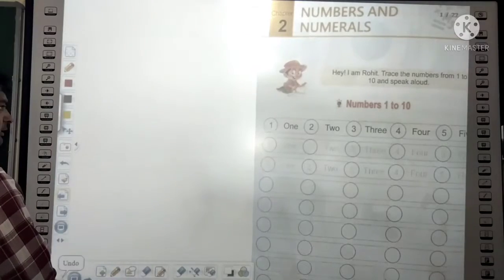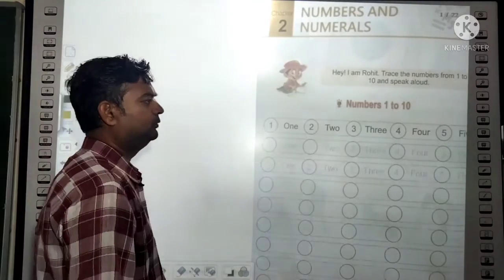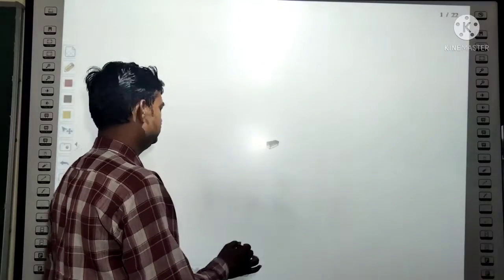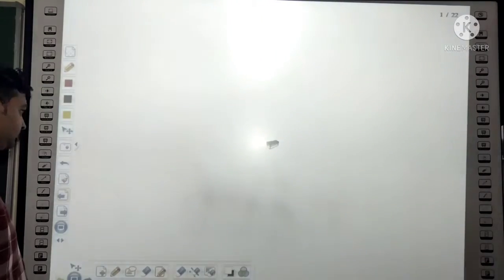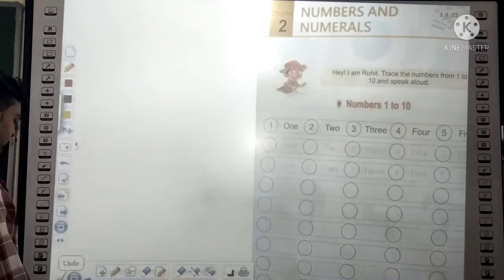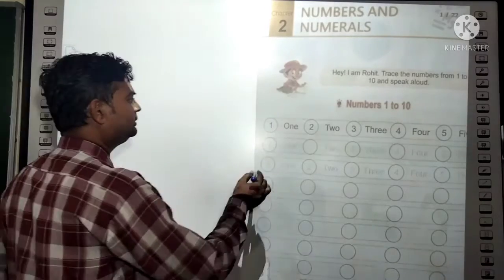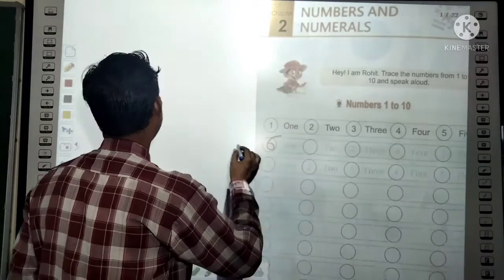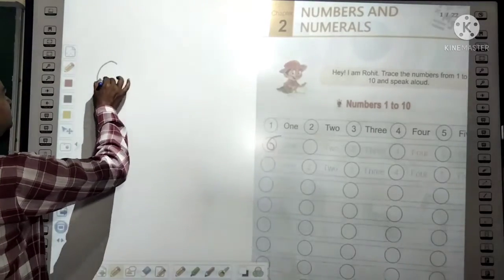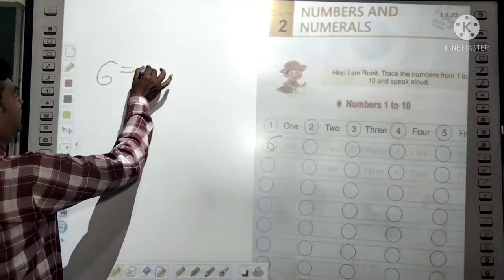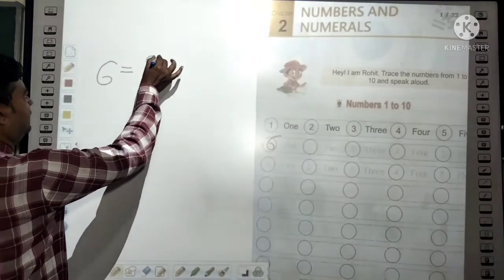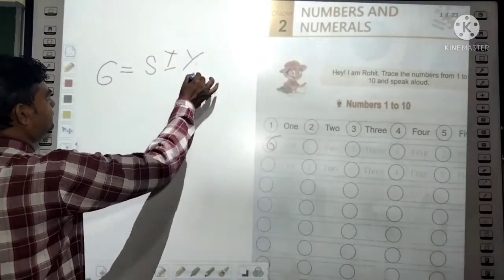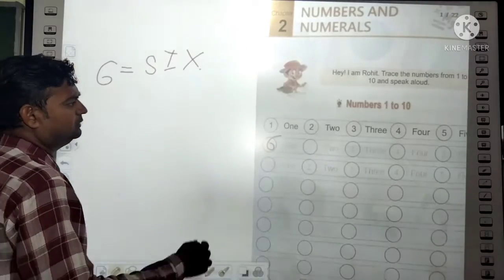So dear, here you will write 6, and you will write the spelling of 6: S-I-X.